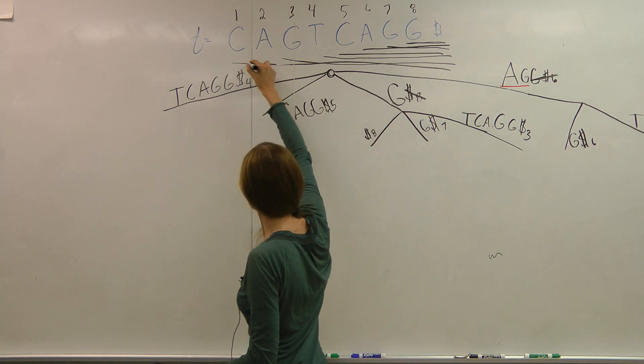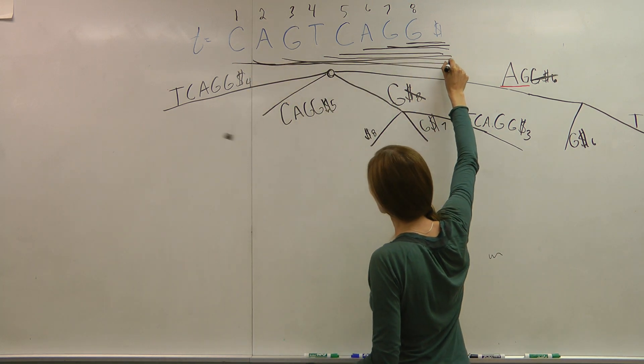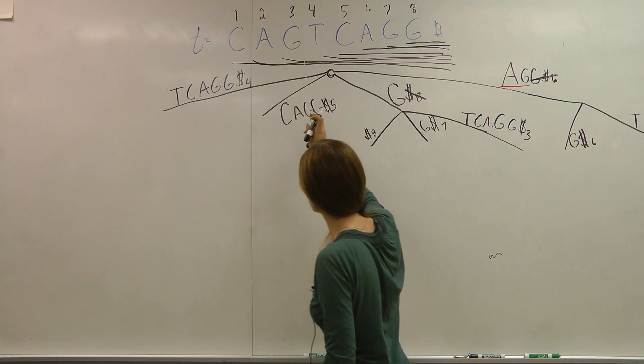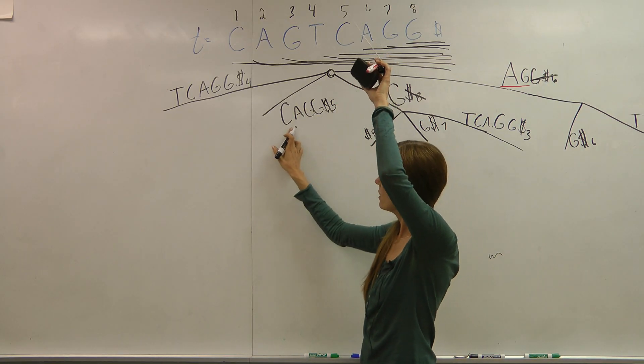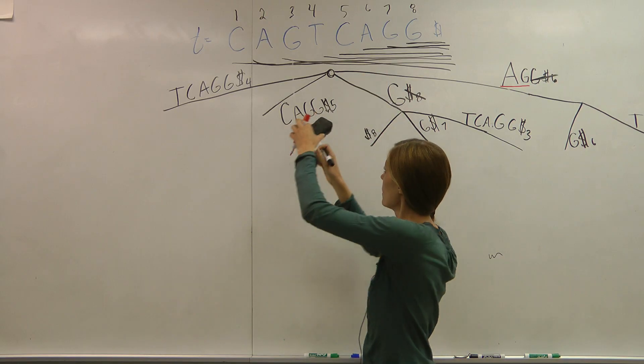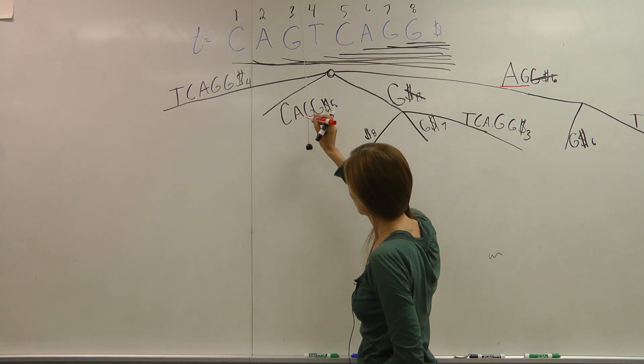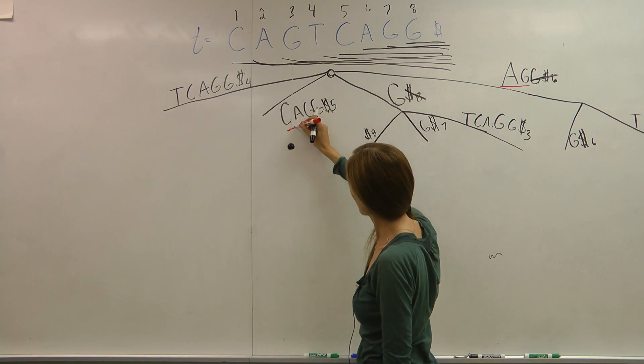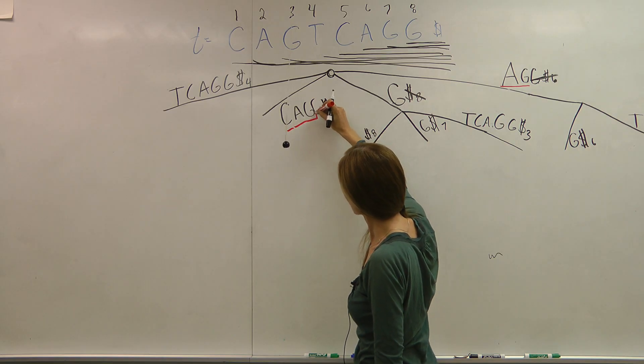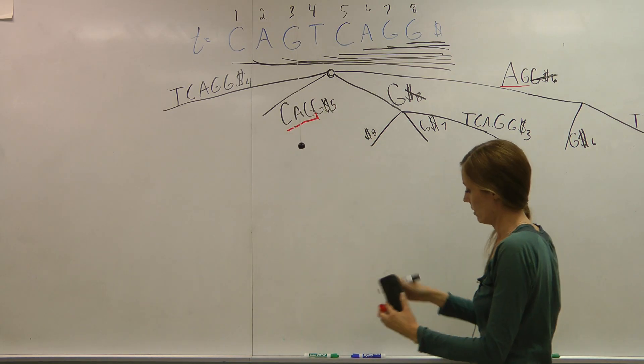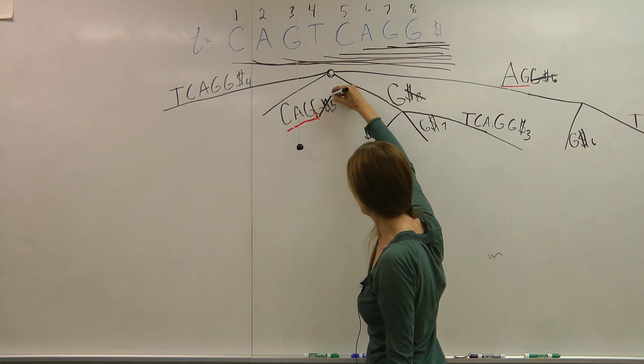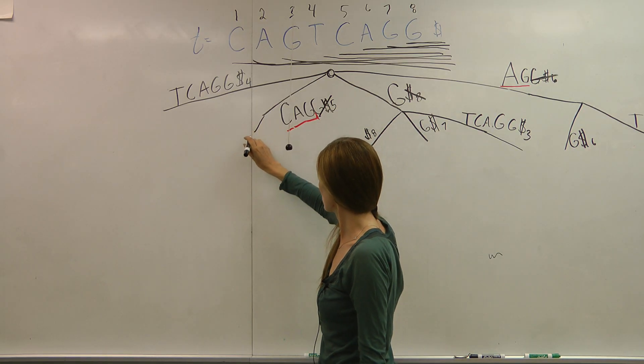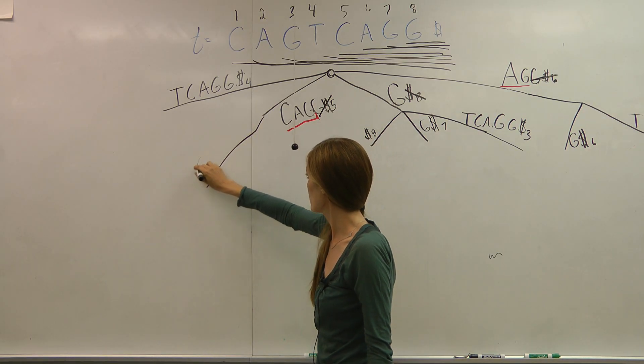I go to my next suffix, which begins with C. So I check my C branch. Here it is. And I start comparing. We have C, we have A, we have G. And right here we have something different. So we have to remove that, which is the G, and start at its own branch. G.